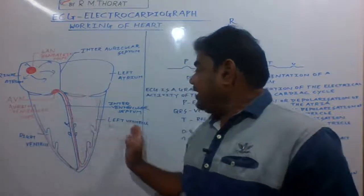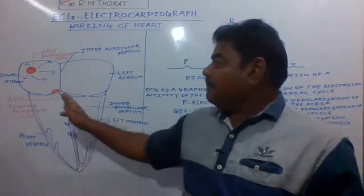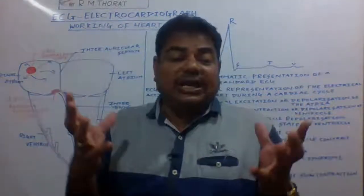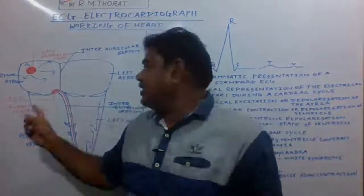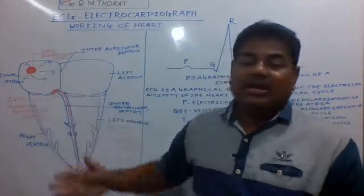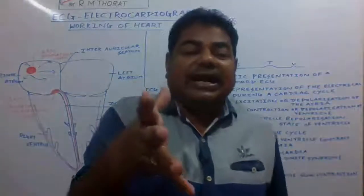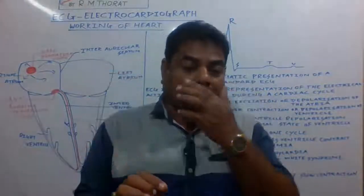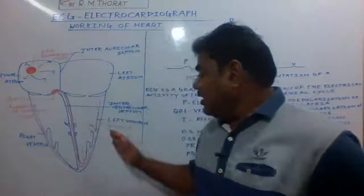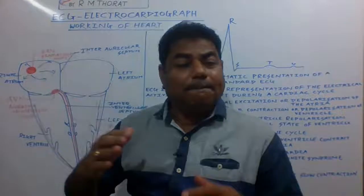The left ventricle receives oxygenated blood from the left atrium, and the right ventricle receives deoxygenated blood. Due to the pressure on the wall of the ventricle, the AV node passes the electrical impulse on the wall of the left ventricle, and both ventricles contract simultaneously. We call this ventricular systole. The oxygenated blood is forced into the aorta and deoxygenated blood is forced into the pulmonary artery.